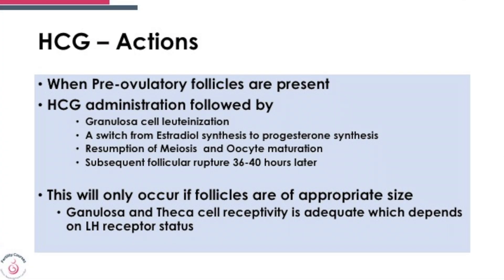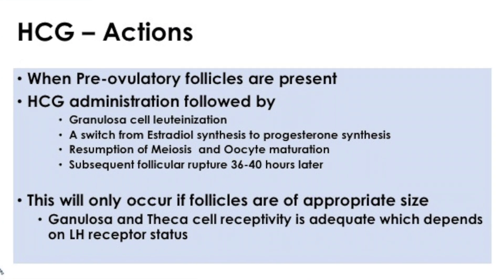HCG works if pre-ovulatory follicles are present — and that is very important. As soon as you give HCG, it causes granulosa cell luteinization. There's a switch that occurs from estradiol synthesis to progesterone synthesis, which is very important when we start looking at poor responders. There is resumption of meiosis and oocyte maturation. Aneuploidies are meiotic in origin; mosaics are mitotic in origin.